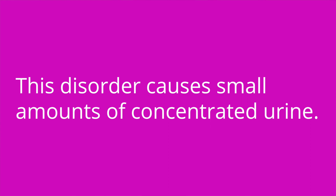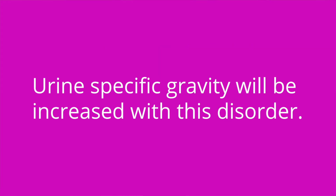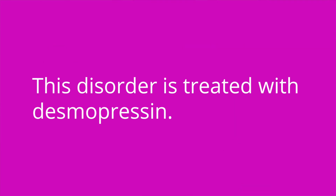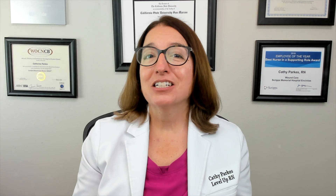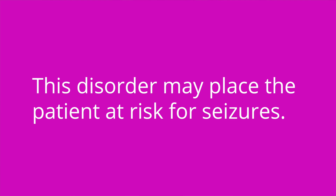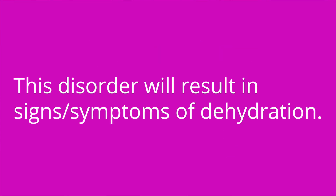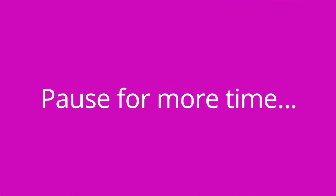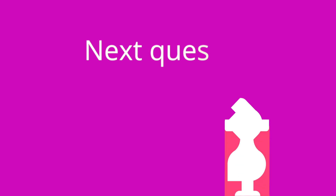Number one: this disorder causes small amounts of concentrated urine. The answer is SIADH. Number two: urine-specific gravity will be increased with this disorder. The answer is SIADH. Number three: this disorder is treated with desmopressin. The answer is diabetes insipidus. Number four: this disorder may place the patient at increased risk for seizures. The answer is SIADH. Number five: this disorder will result in signs and symptoms of dehydration. The answer is diabetes insipidus. Number six: this disorder causes an increase in blood osmolality. The answer is diabetes insipidus.